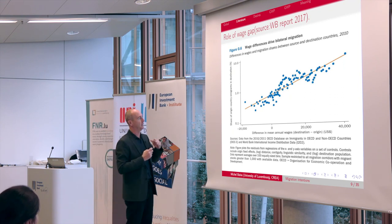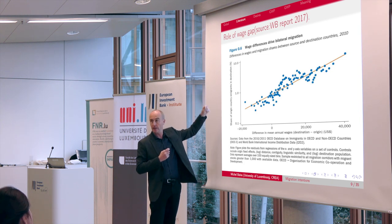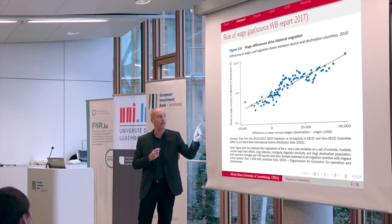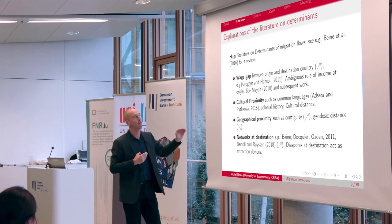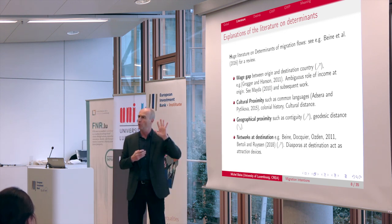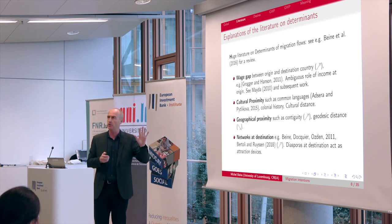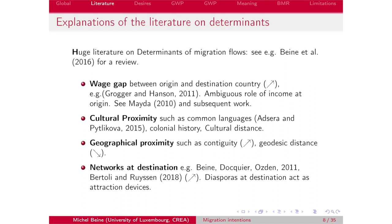If you connect the share of people moving with the differential in the expected wage between destination and origin, you get a very good prediction. So the wage differential is obviously one of the main drivers. We know there are additional factors, like cultural proximity — if people share a similar or common language. It has been shown that cultural proximity is also an important driver.